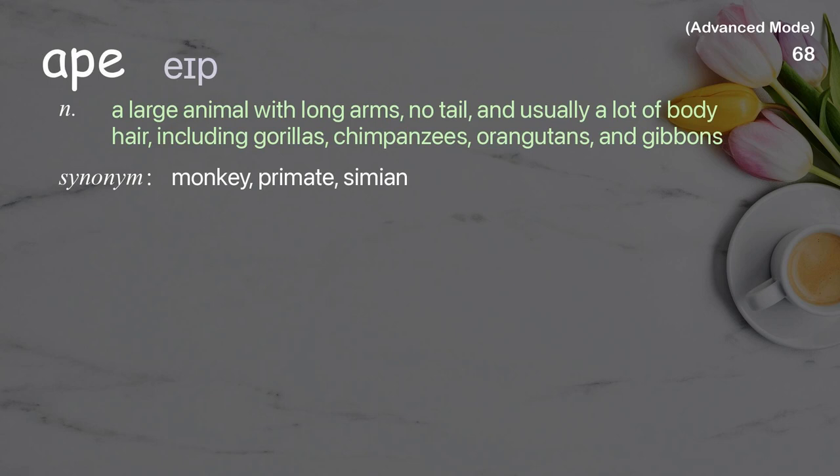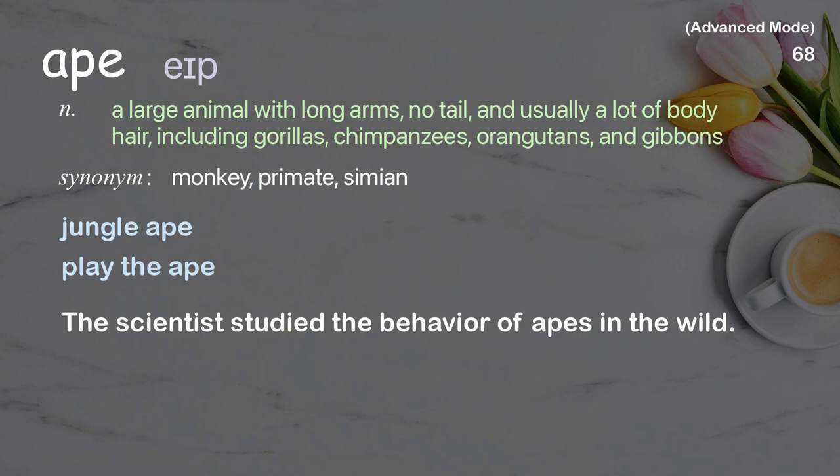Ape: A large animal with long arms, no tail, and usually a lot of body hair, including gorillas, chimpanzees, orangutans, and gibbons. Examples: Jungle ape, Play the ape. The scientist studied the behavior of apes in the wild.